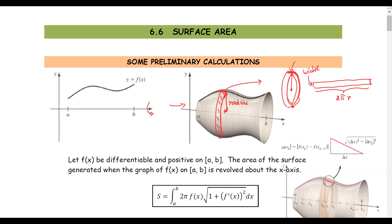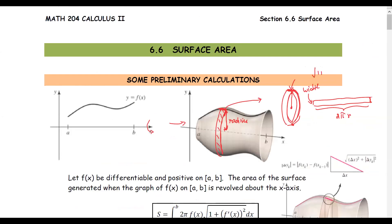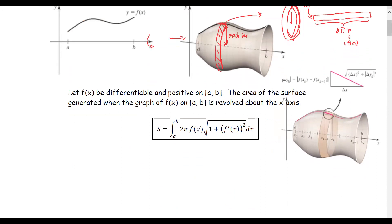From the previous section on arc length, the arc length is the sum of segment lengths, which is the square root of 1 plus y prime squared, with respect to x. So for the case where the graph revolves about the x-axis, the formula is s equals the integral from a to b of 2 pi times f(x) times the square root of 1 plus f prime(x) squared, with respect to x.